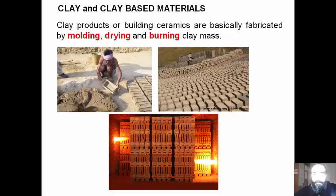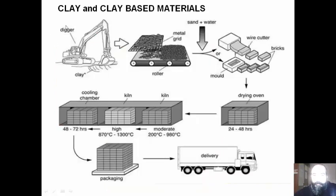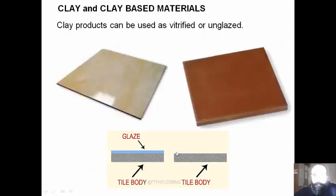Let's look at the production of clay products. Clay products, or building ceramics, are basically fabricated by molding, drying, and burning. An excavator gets clay out of the earth; in a metal grid it is screened and may be crushed. It is then mixed with sand and water. The clay mass can either be molded or cut via wire. We dry the bricks first, then fire them in kilns. After that we have packaging and delivery. Clay products can be used as vitrified or unglazed.